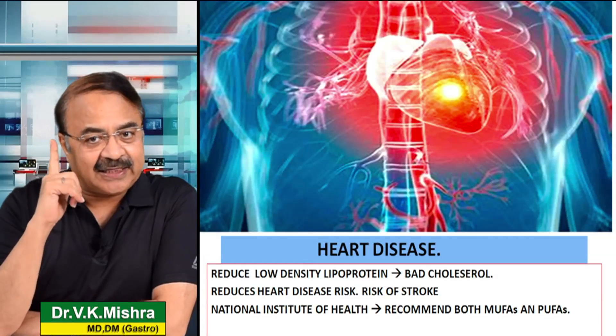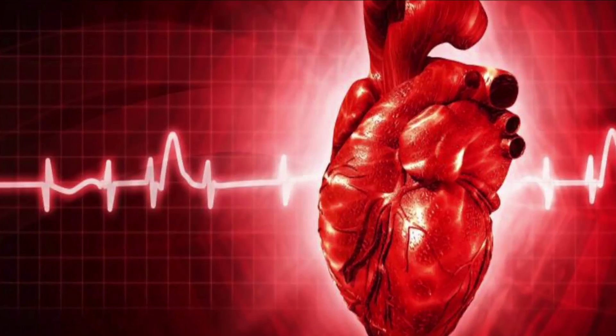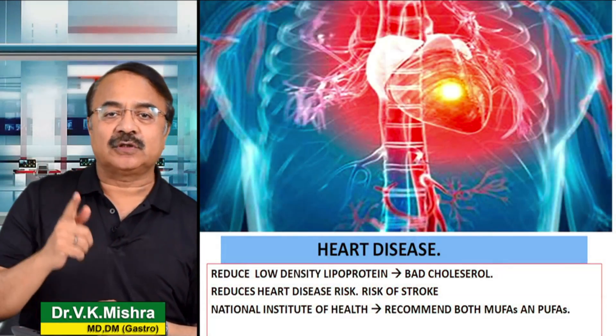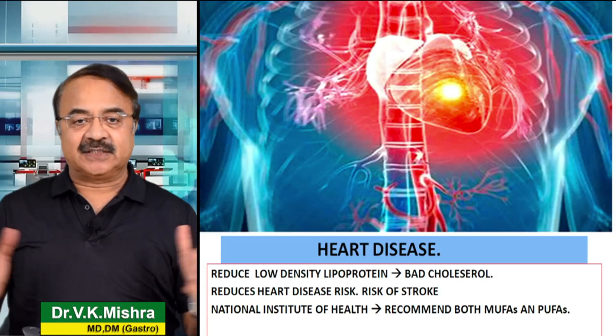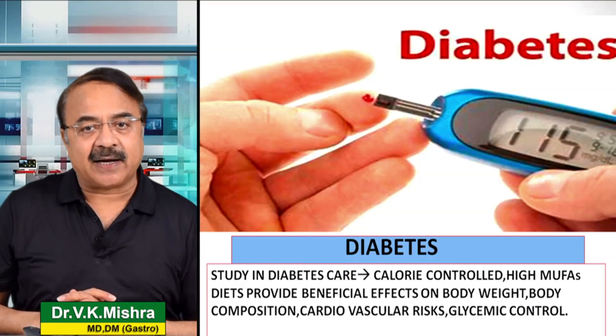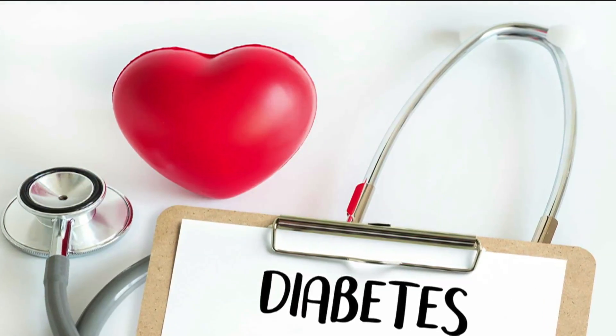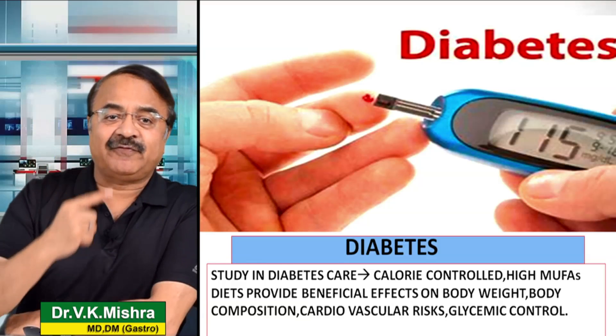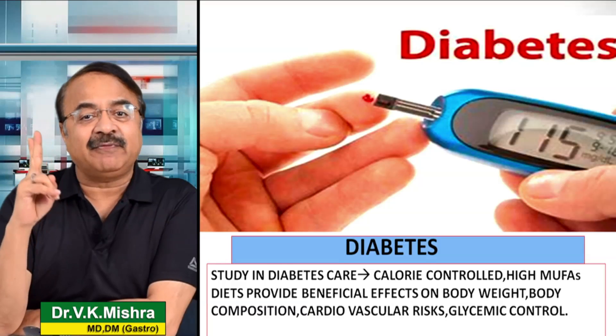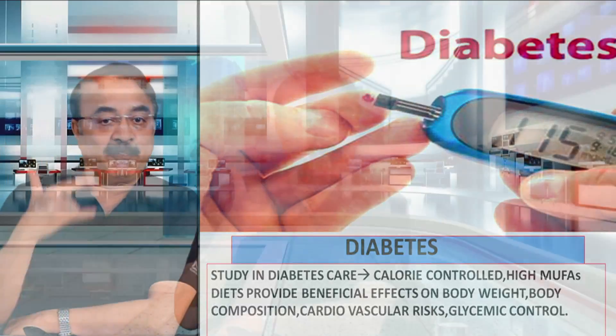जो National Institute of Health है, उसने recommend किया कि आपको actually MUFA and PUFA, that is poly unsaturated fat, यह दोनों ठीक मात्रा में इस्तेमाल करने चाहिए. Now look at the diabetes. एक study है जो published हुई Diabetes Care में. What it said was that calorie controlled high MUFA diets provide significant benefits in body weight, body composition, cardiovascular risk, and glycemic control in diabetic patients. इसका मतलब यह है कि high MUFA and calorie controlled अगर आप diet लेते हैं, तो diabetes में आपको help होती है.